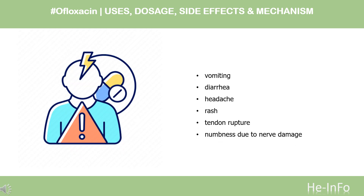Side Effects. When taken by mouth, common side effects include vomiting, diarrhea, headache, and rash. Other serious side effects include tendon rupture, numbness due to nerve damage, seizures, and psychosis. Use in pregnancy is typically not recommended. Ofloxacin is in the fluoroquinolone family of medications. It works by interfering with the bacterium's DNA.